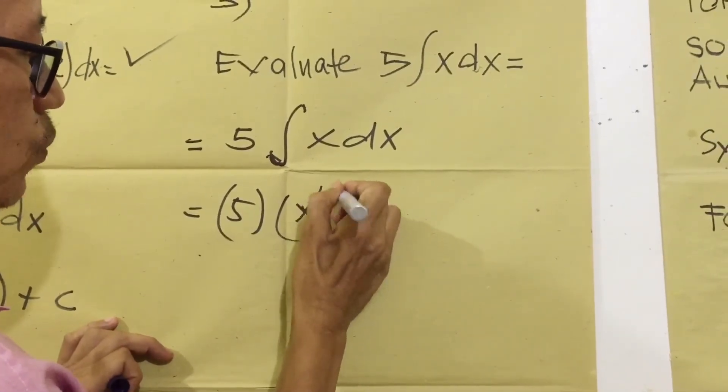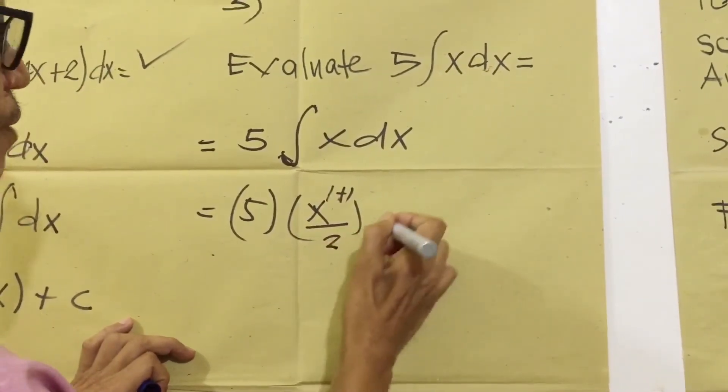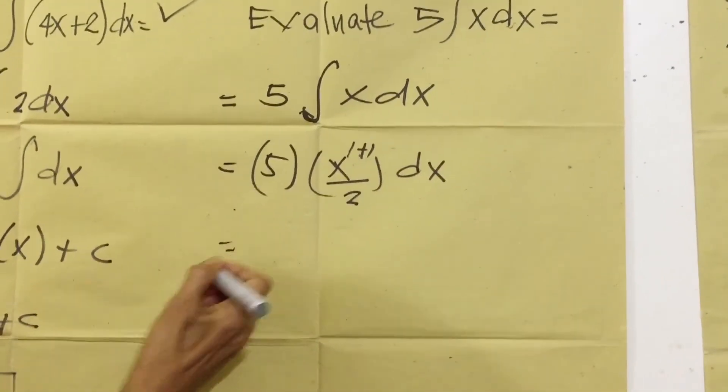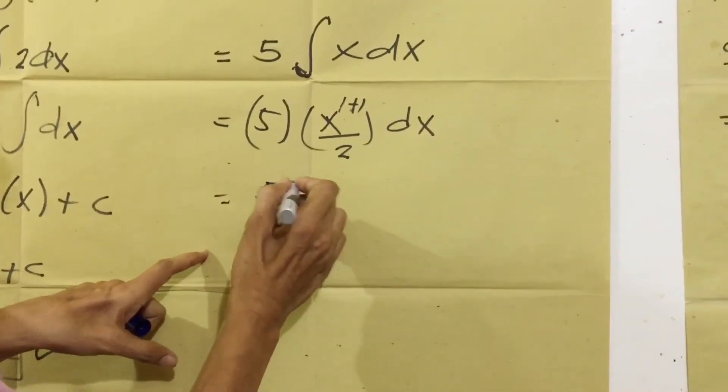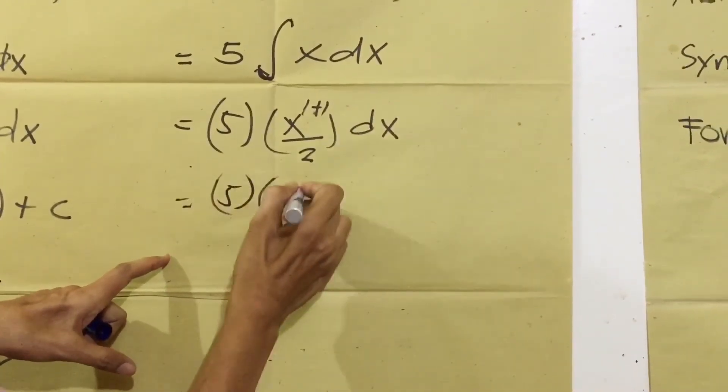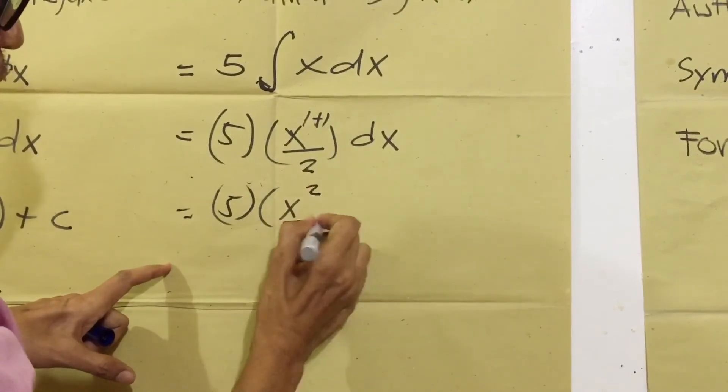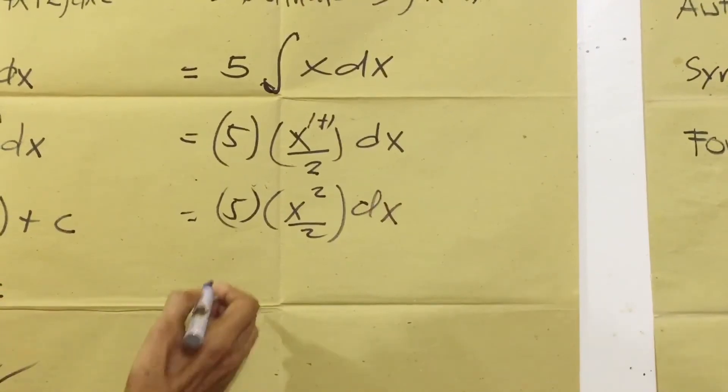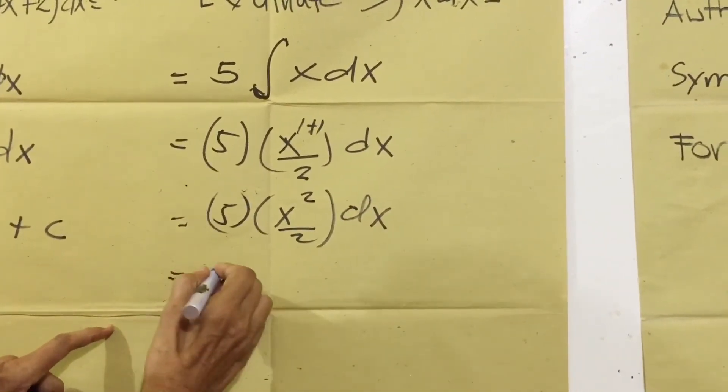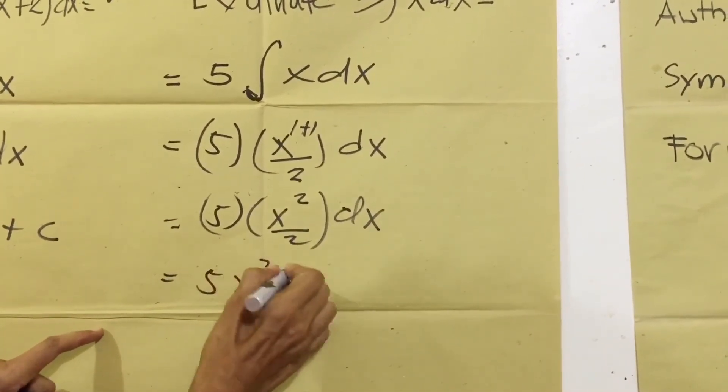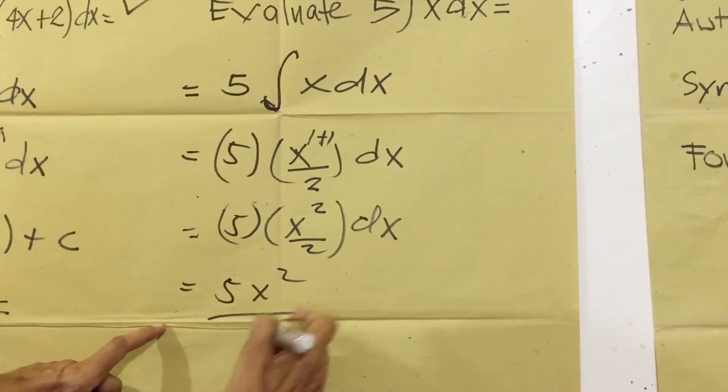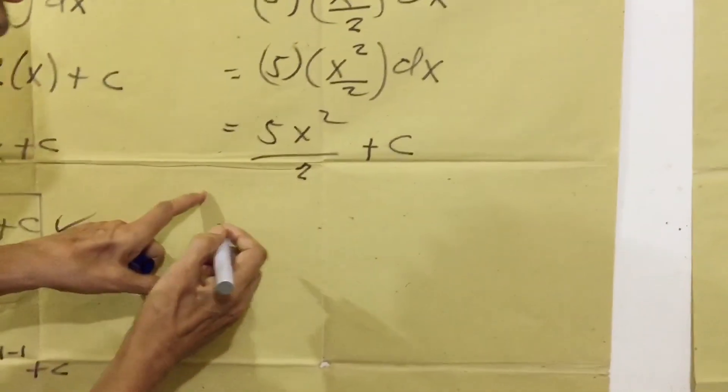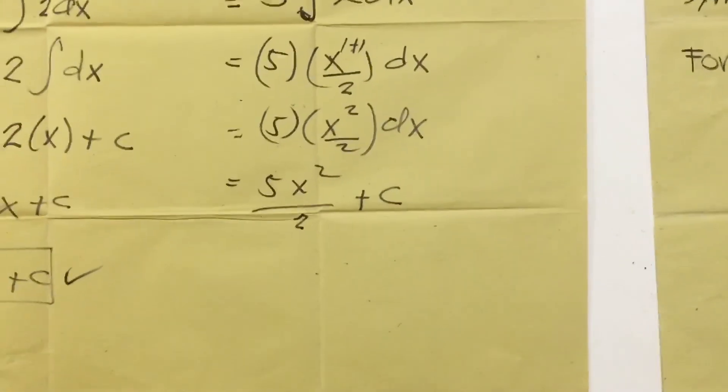One plus one equals two. Then DX. Then we simplify five times one plus one equals two over two. Then DX equals five times X squared over two. This one becomes plus C. That's our final answer.